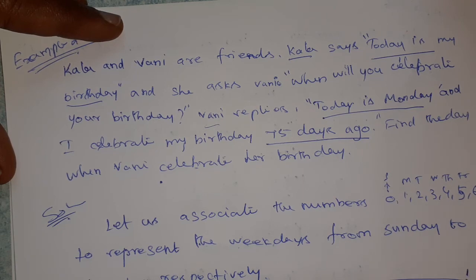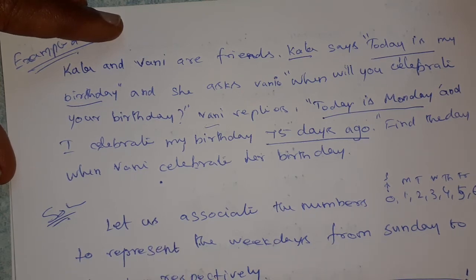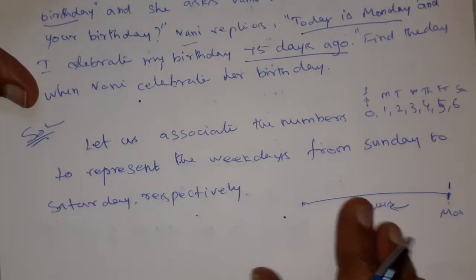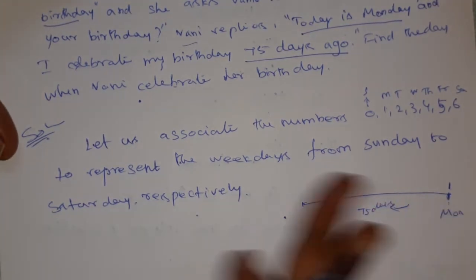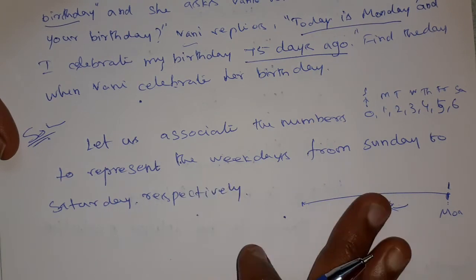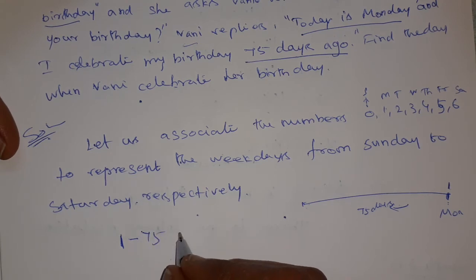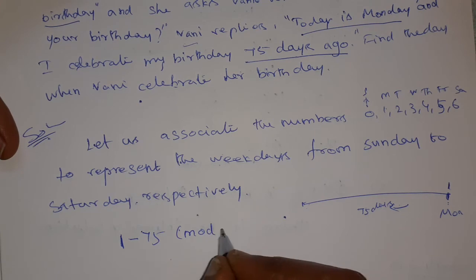Vani's birthday was 75 days ago. We are going to use the number line. Since a week has 7 days, we calculate 1 minus 75 mod 7.